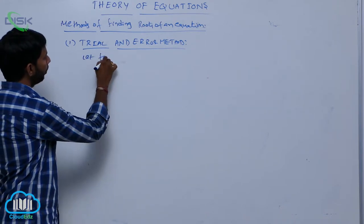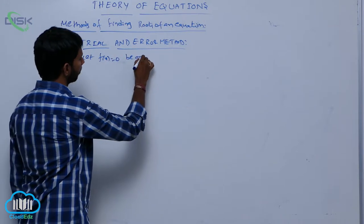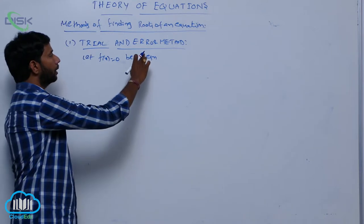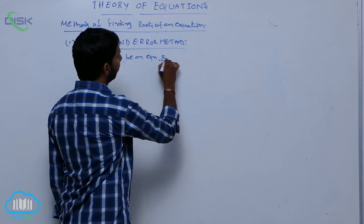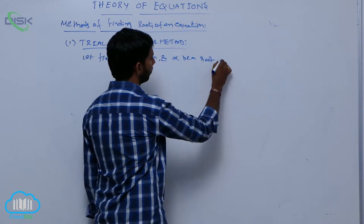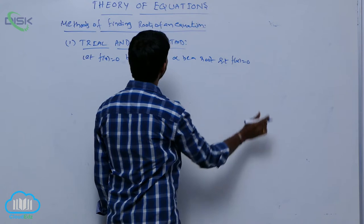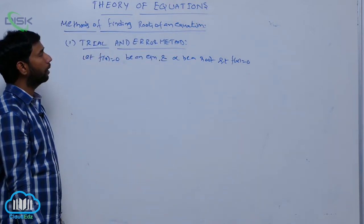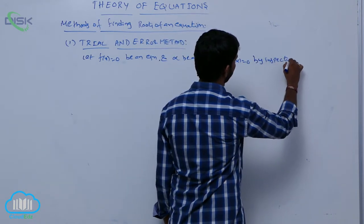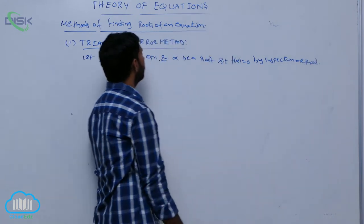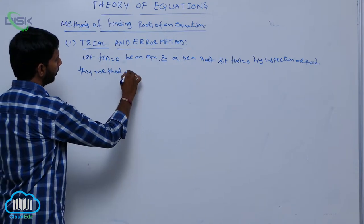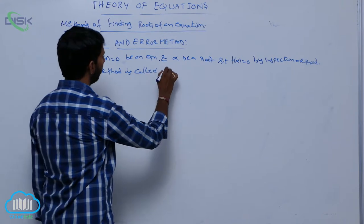Let f of x equal to 0 be an equation, and let alpha be a root such that f of alpha is equal to 0. By inspection method, this method is called the trial and error method.